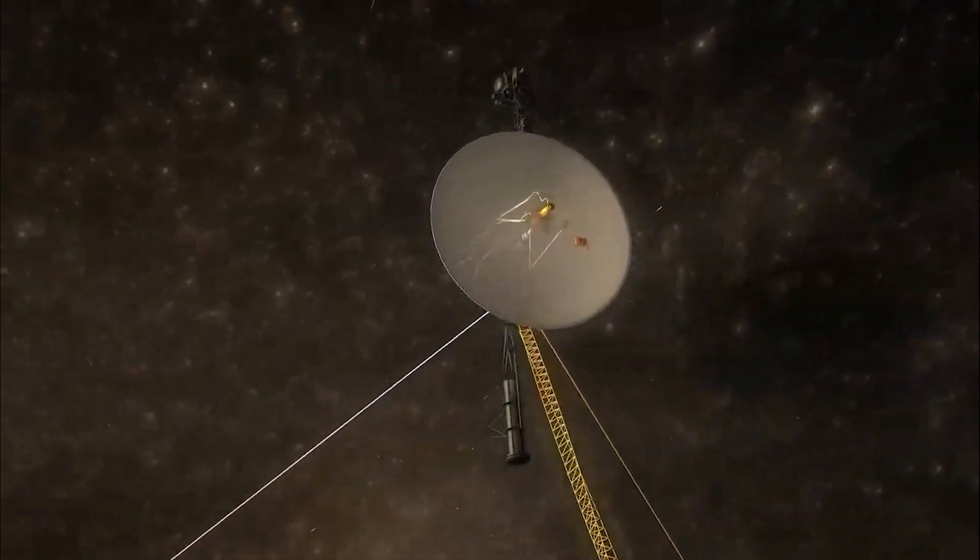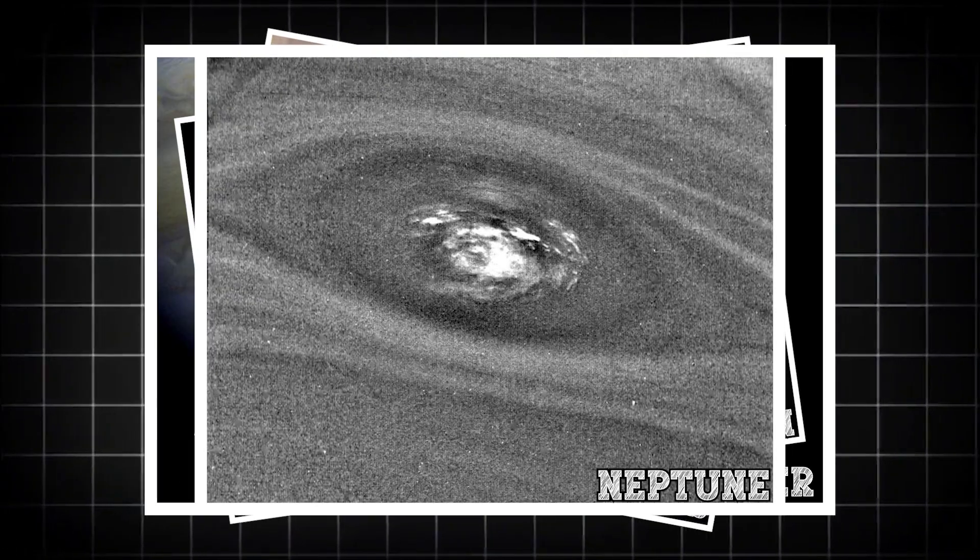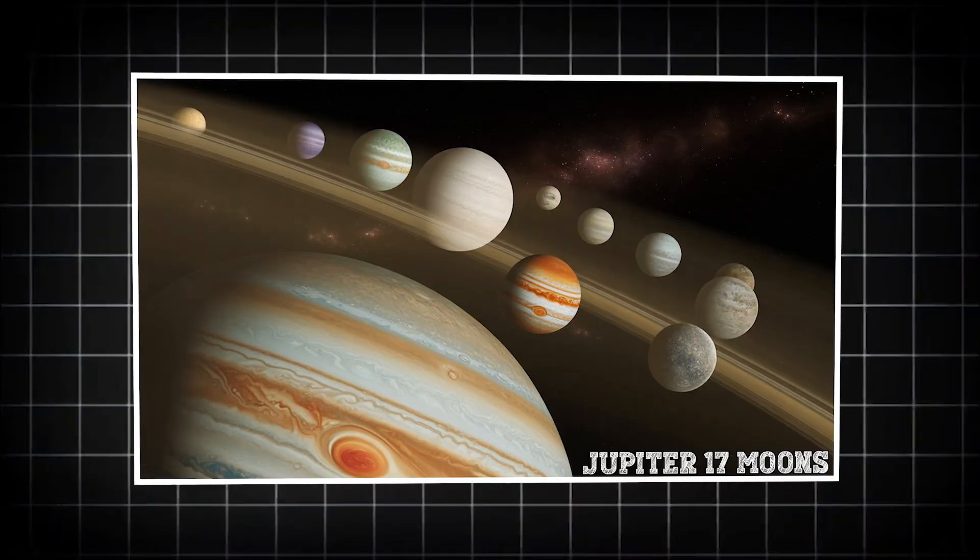It showed us close-ups of Jupiter, Saturn, Uranus, and Neptune, revealing storms, rings, and moons we never knew existed.